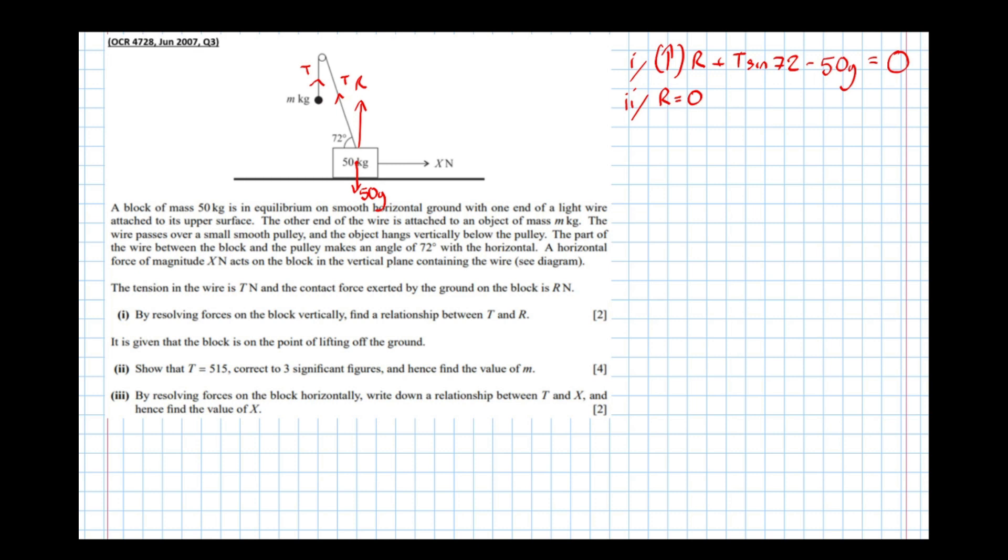So now it says, show that t equals 515. Well, if we take the equation above, now that r is equal to zero, this equation reduces to t sine 72 equals 50g.